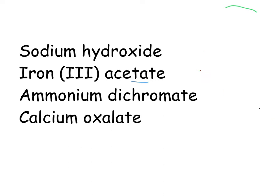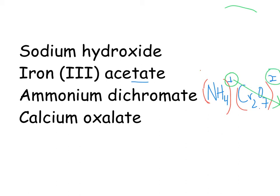Next example: ammonium dichromate. Ammonium is NH4 with a plus 1 charge — it's a polyatomic cation, so I put brackets around it. Dichromate is Cr2O7 with a 2 minus charge. This is a case where I have two polyatomic ions, so I put brackets around both and perform the crossover rule. The plus 1 goes beside dichromate and the 2 minus goes beside ammonium, resulting in (NH4)2Cr2O7. Since the 1 is outside the bracket for dichromate, it's not necessary, so I remove it.